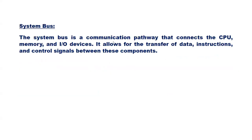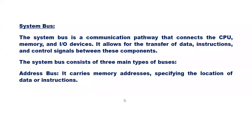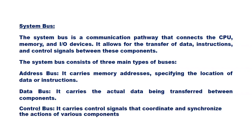The system bus is a communication pathway that connects the CPU, memory, and I/O devices, allowing transfer of data, instructions, and control signals between components. It consists of three main types: the address bus, which carries memory addresses specifying the location of data or instructions; the data bus, which carries the actual data being transferred; and the control bus, which carries control signals that coordinate and synchronize the actions of various components.